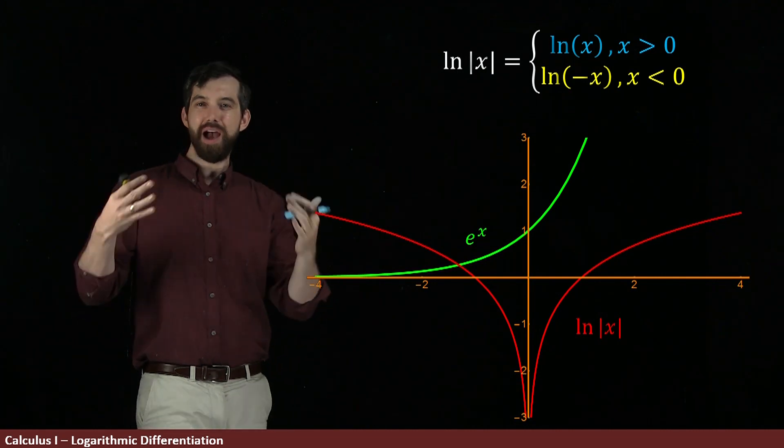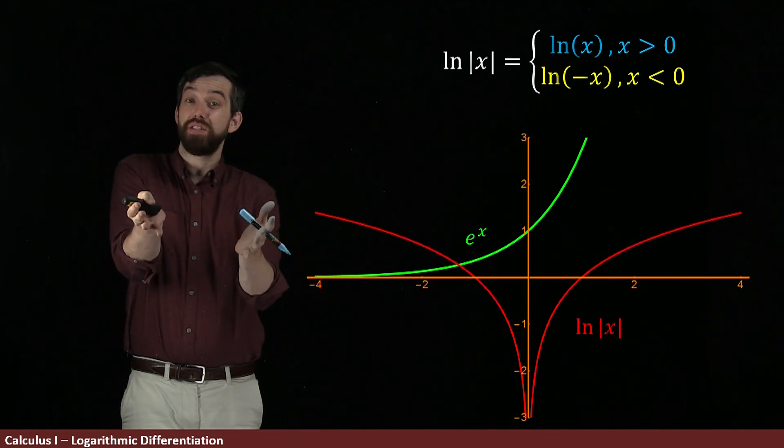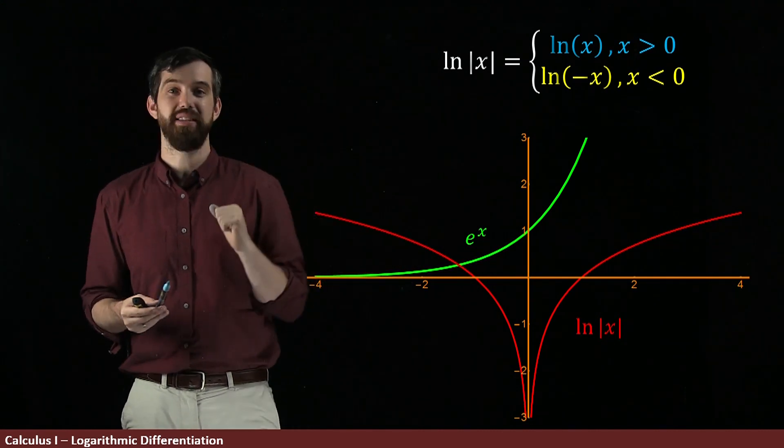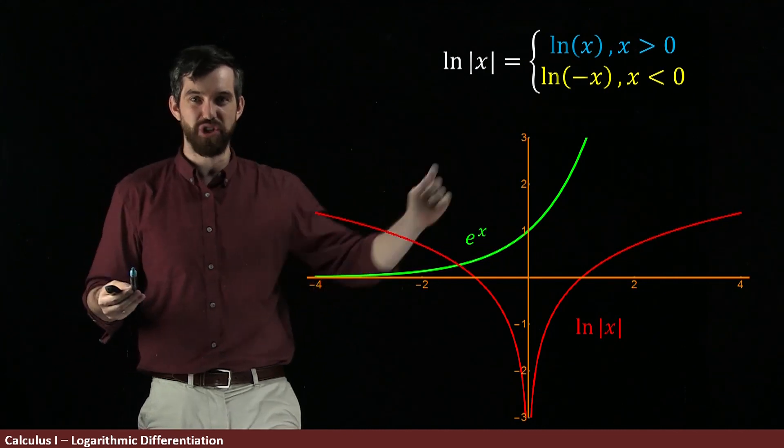And indeed, whenever I have an absolute value, an absolute value is a piecewise defined function. It tells you one thing when x is greater than 0, another when x is less than 0. When x is greater than 0, absolute value doesn't do anything, it's just the natural logarithm of x.